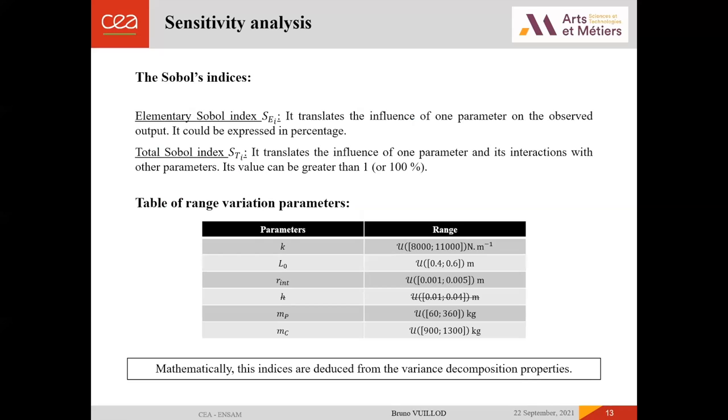So we will do this sensitivity analysis thanks to Sobol's indices. So what is it briefly? We will have elementary and total Sobol index. Elementary Sobol index translates the influence of one parameter on the observed output, a scalar output. It could be expressed in percentage. We have also the total Sobol index. It translates the influence of one parameter and its interactions with other parameters. Its value can be greater than one.